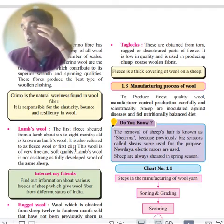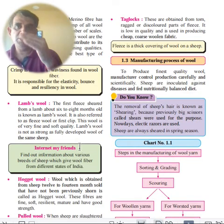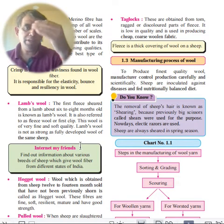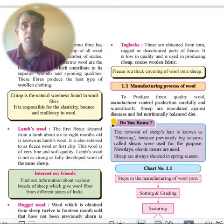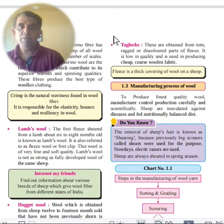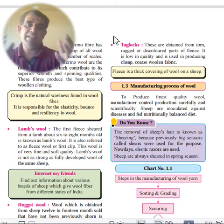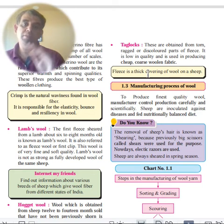To summarize wool types by age: Lamb is six to eight months; Hogget is 12 to 14 months; Wether is 14 months and above. Tag locks are from the ragged, discolored part of the fleece — very low quality and cheap.